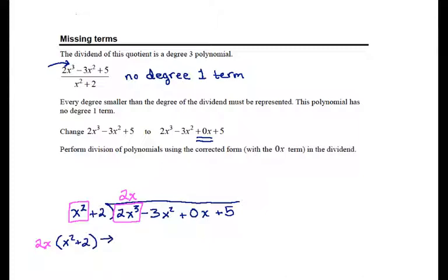and write it below the polynomial. That is 2x cubed plus 4x. Whoops. I do want to align that 4x with the 0x so that my like terms are lined up in the step in which I do this subtraction.